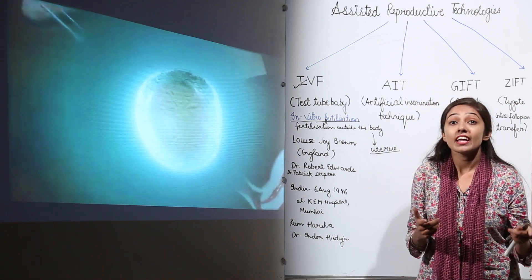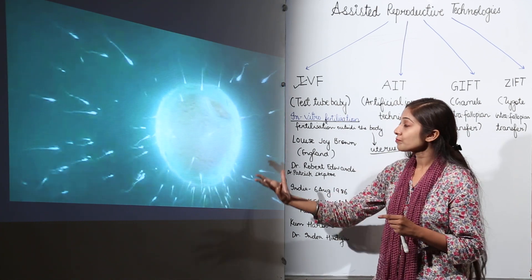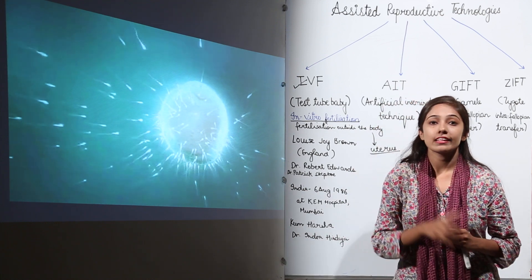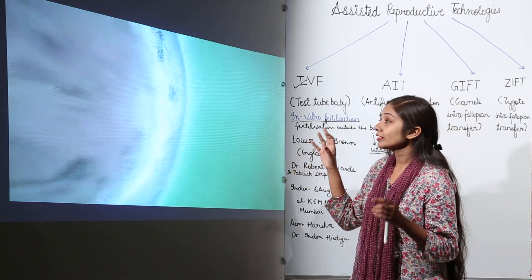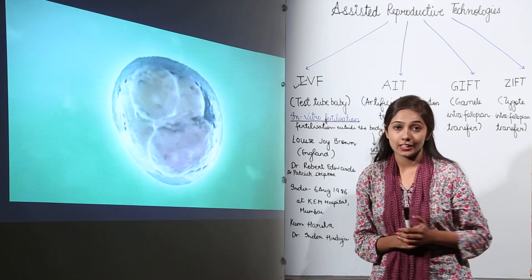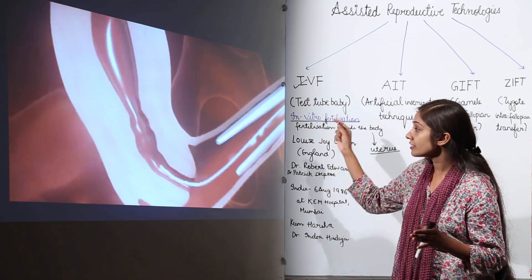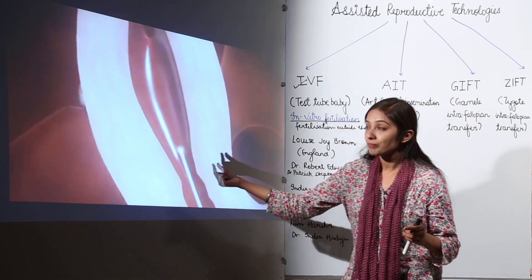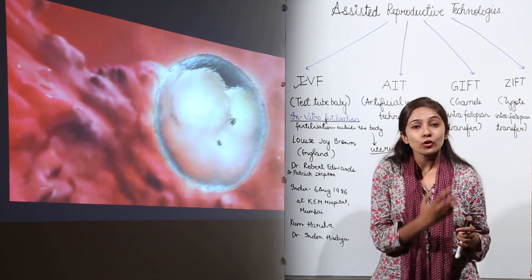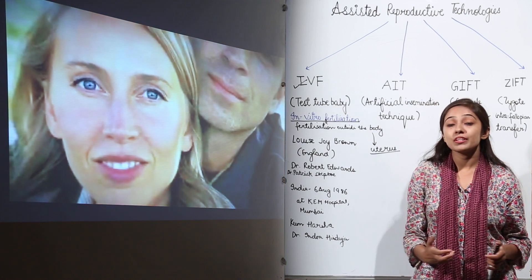In those test tubes we have semen from the male, which contains a lot of sperms. Only one sperm enters the egg to form the first cell — the zygote. After fertilization, the zygote divides to form an eight-cell stage embryo. This embryo is then implanted artificially by a flexible tube inside the uterus, where it develops into a fetus and finally into a child, allowing for normal delivery.